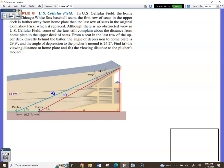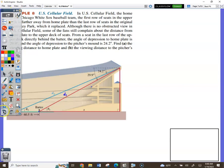Although there's no obstructed view in the new field, some of the fans complain about the distance from home plate to the upper deck seats. From the seat in the last row of the upper deck directly behind the batter, the angle of depression to home plate is 29.9 degrees, the angle of depression to the pitcher's mound is 24.2 degrees. Find the viewing distance to home plate and the viewing distance to the pitcher's mound. They've already labeled it all for you too. So you can see right here it says d1, and then right here it says d2. So we're finding the length of the hypotenuse in the red triangle, and then we're finding the length of the hypotenuse in the blue triangle. We've got a lot of information here. If you look at the red, focus on just red, it says theta 1.